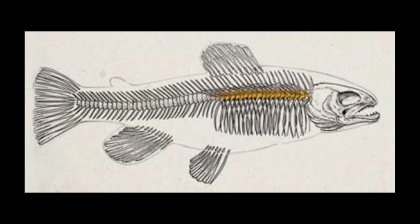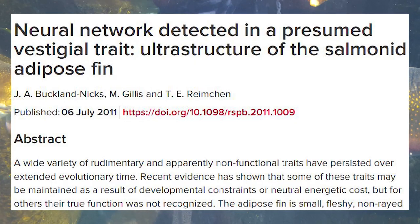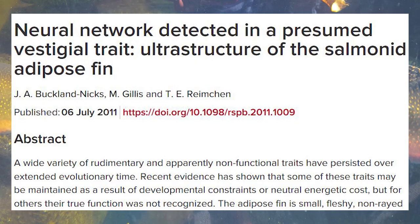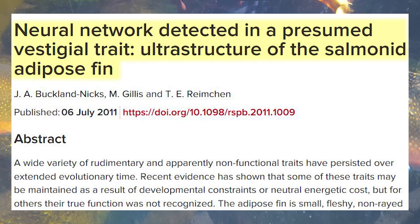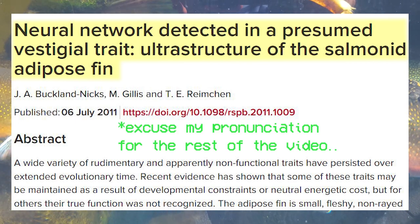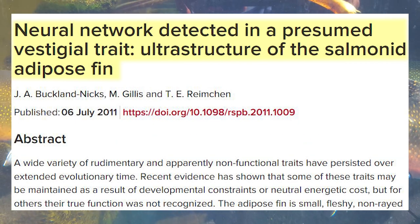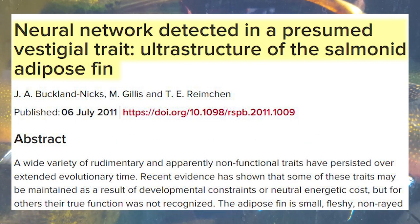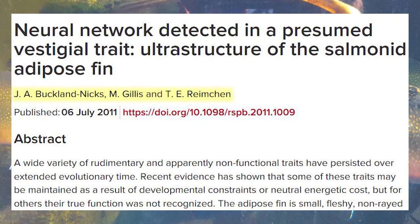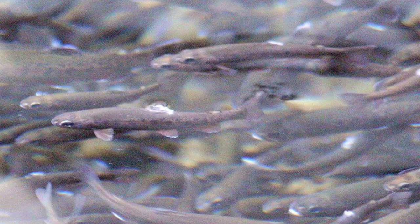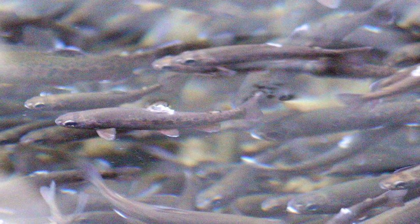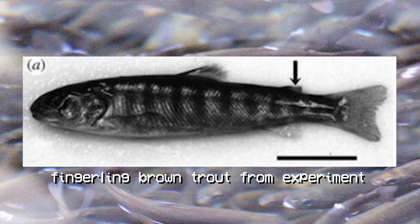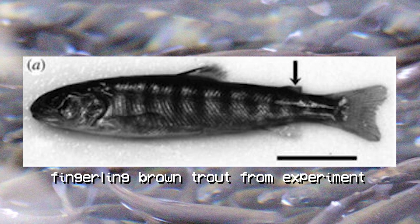So if the adipose fin is not comprised of adipose, then what does the adipose fin consist of? In a 2011 research article studying the neural networks detected in a presumed vestigial trait — ultra-structure of the salmonoid adipose fin — by Buckland, Nix, Gillis, and Remichen, a study of the adipose structure of several young hatchery-raised brown trout was conducted.